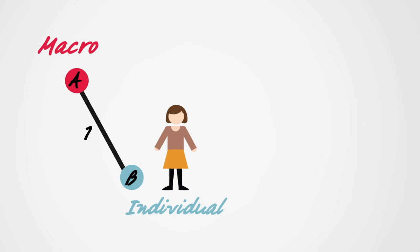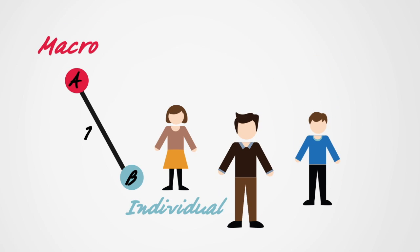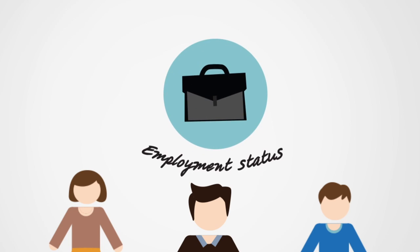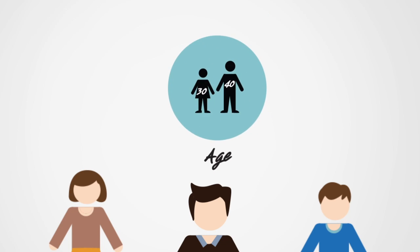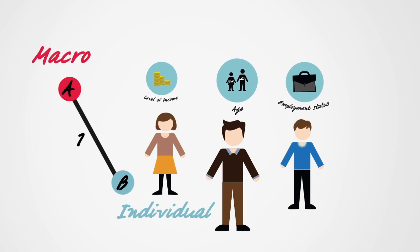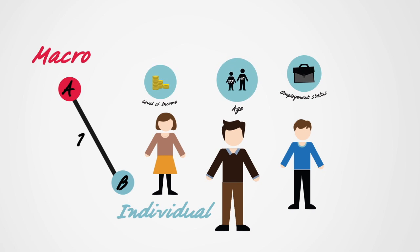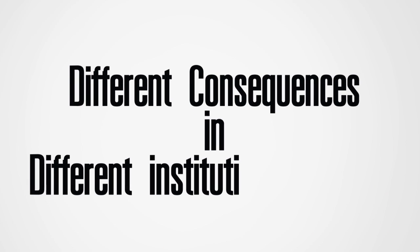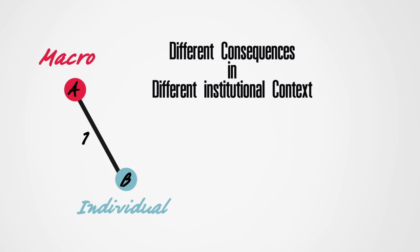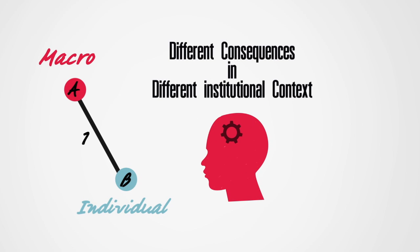The same macro-change can influence different individuals differently. In the case of basic income, a person's employment status, level of income, and age make important differences. For this reason, it's not sufficient to assume that any individual can represent the whole population. The causal influence of A on B is mediated by structural and institutional background conditions. The same policy change can have very different consequences in different institutional contexts. While these background conditions are not represented in the diagram, one of its purposes is to help social scientists think about them.